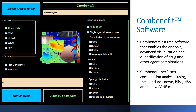ComBenefit is a free software that enables the analysis, advanced visualization and quantification of drug and other agents' combinations. ComBenefit performs combination analyses using the standard LOW, BLIS, HSA, and a newly developed SANE model. The purpose of this video is to provide a quick guide to the basics of how to set up ComBenefit and run synergy analyses with the software.